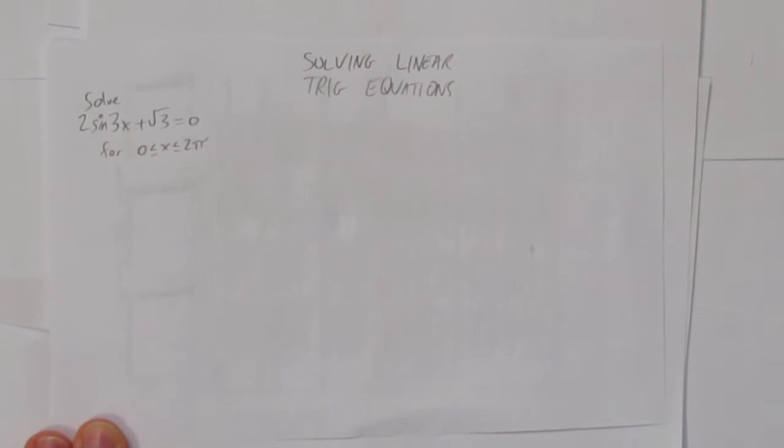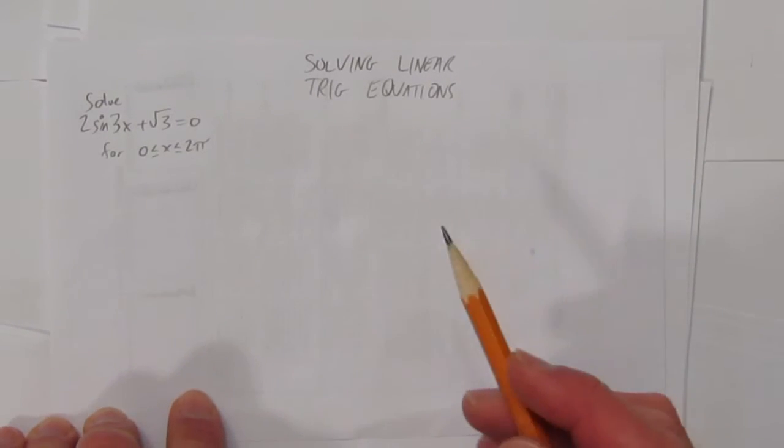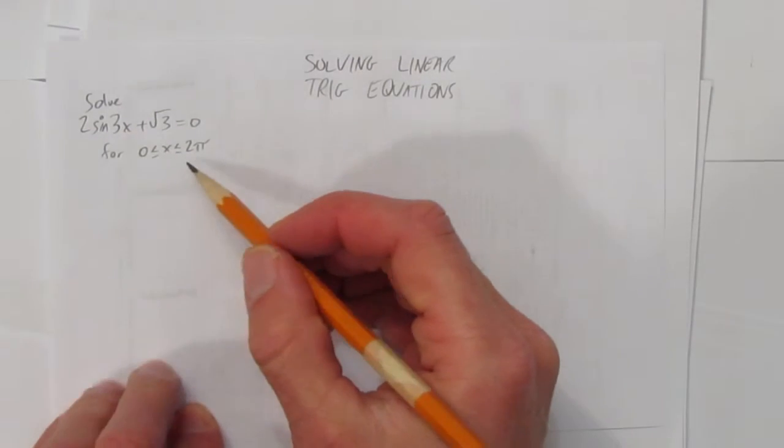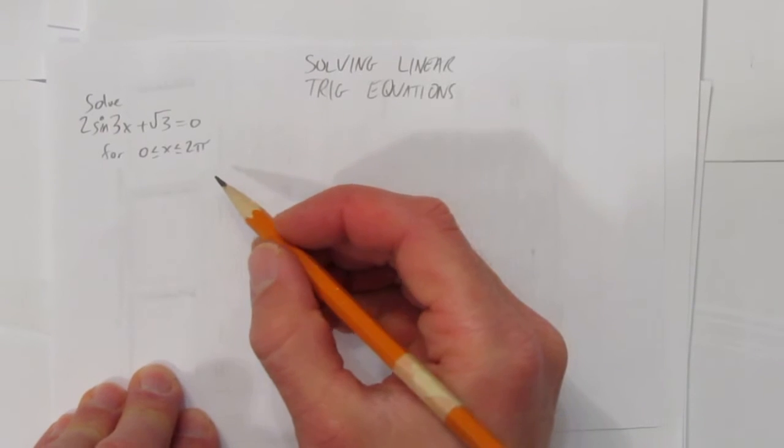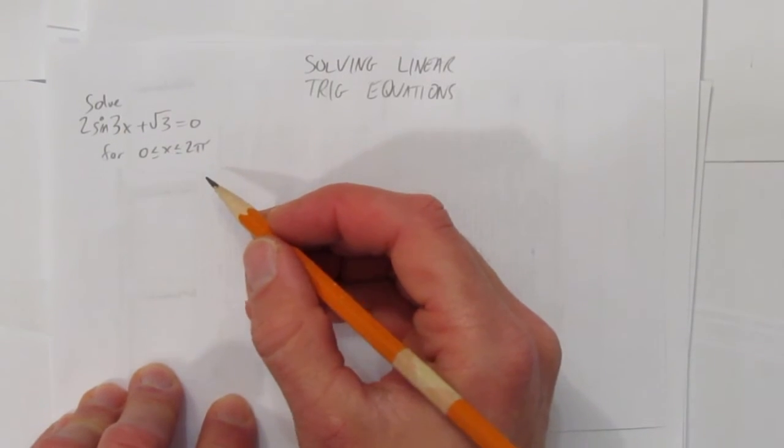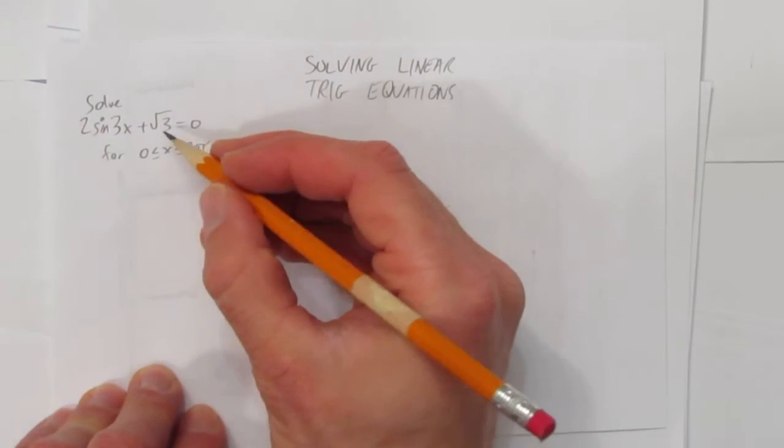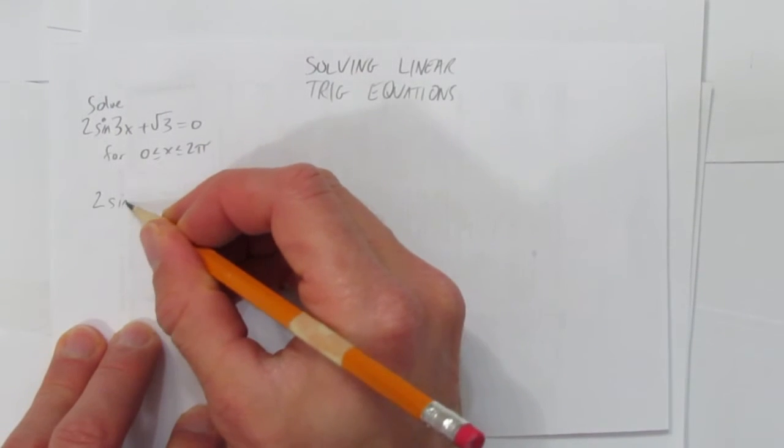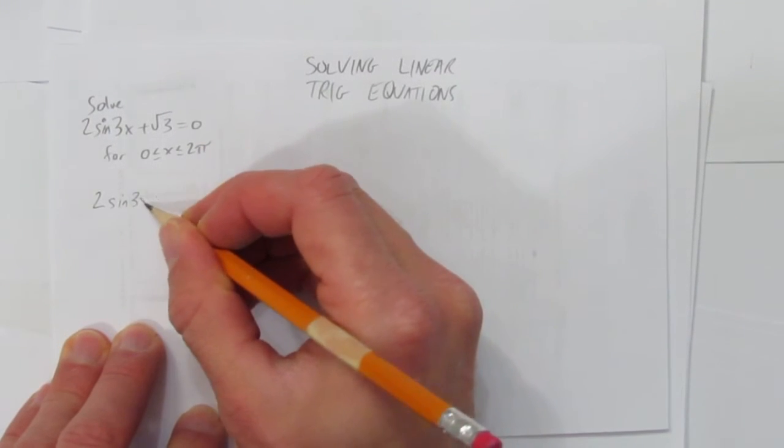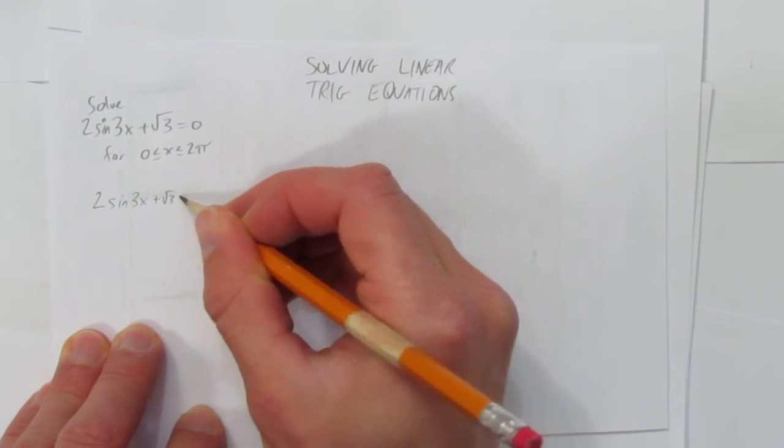In this video, we'll look at solving linear trigonometric equations. The equation you're asked to solve is 2sin(3x) + √3 = 0 for 0 ≤ x ≤ 2π. The first thing is to start rearranging. I'll rewrite the equation: 2sin(3x) + √3 = 0.